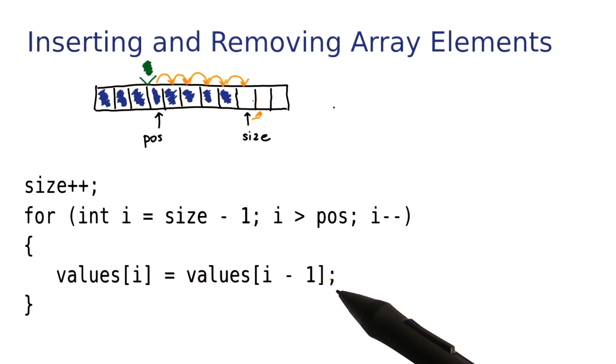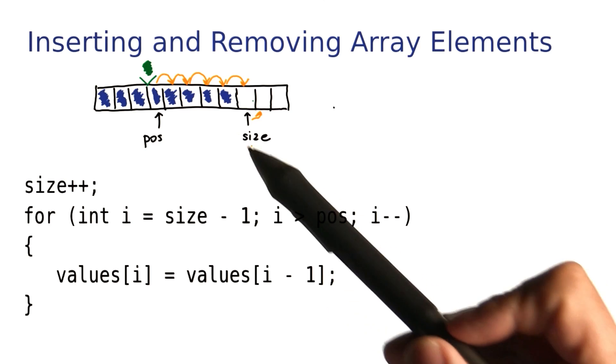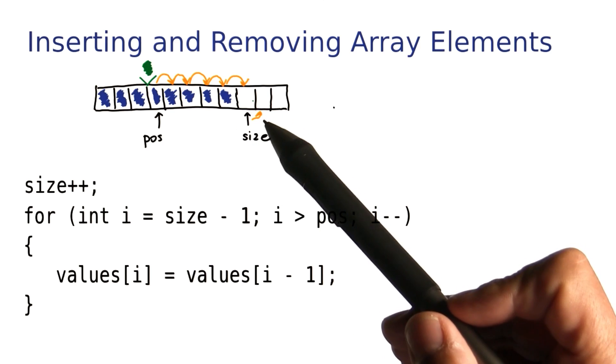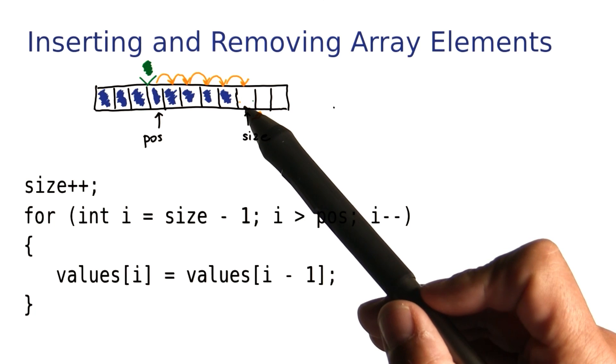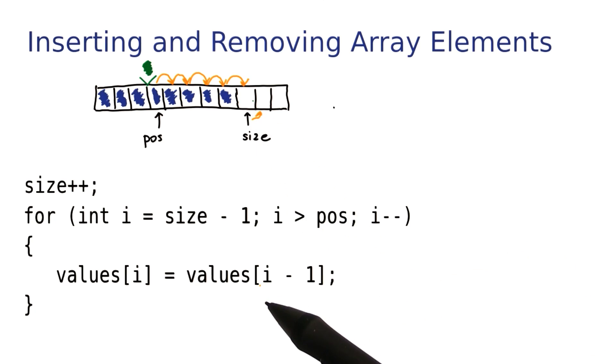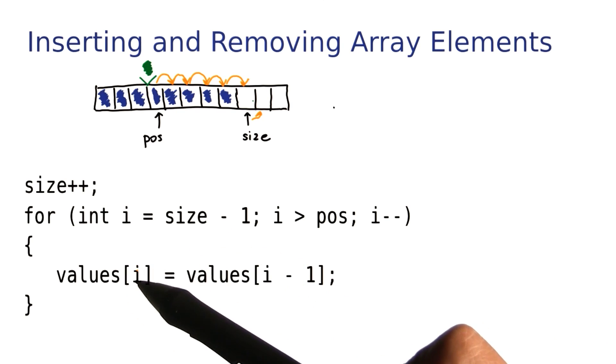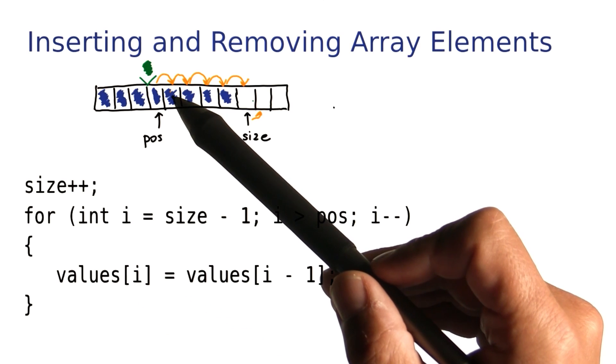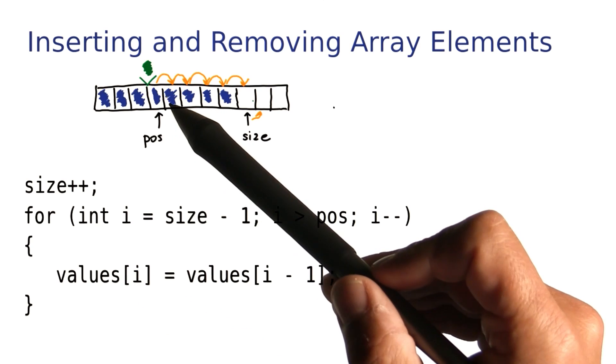Here is the loop to make room for the new element. So when I increase my size, then I'm starting at size minus 1, which is the same as the old size. I now go backwards, and each of the moves goes the other direction than the one that you've seen with removal. It goes from a lower index to a higher index.